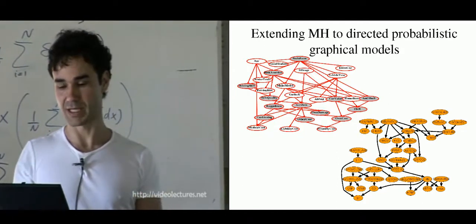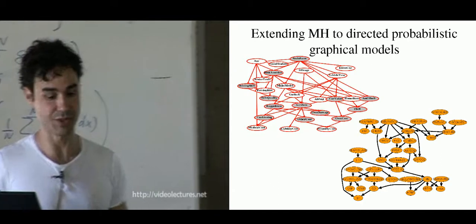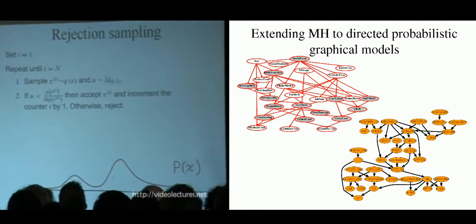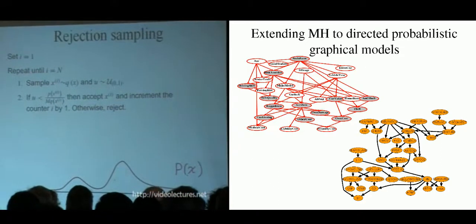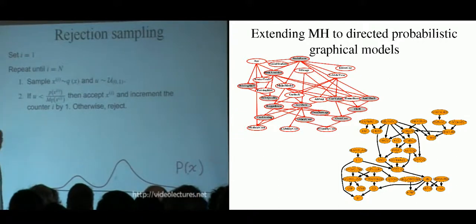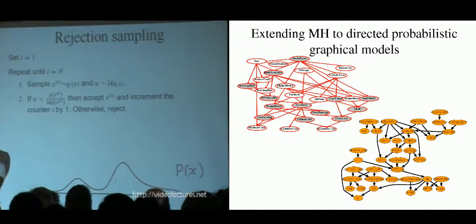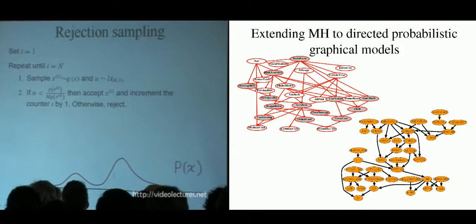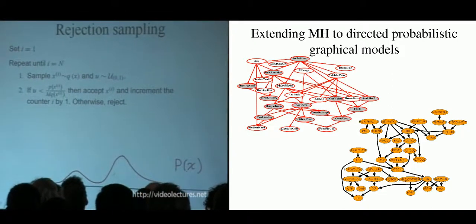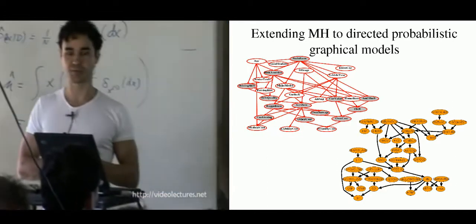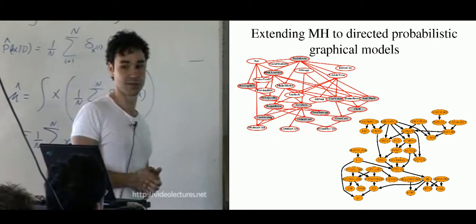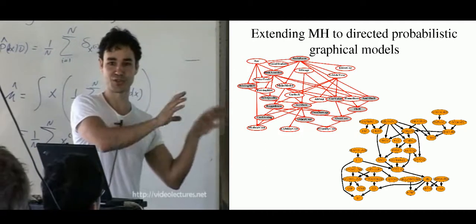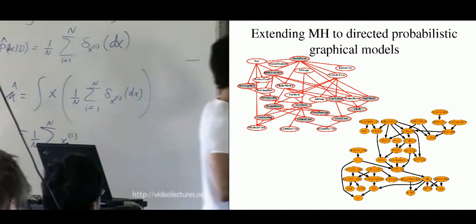Now let's look at the first basic technique for generating samples: rejection sampling. The algorithm is simple. We construct another distribution q(x) — think of it as a Gaussian, something we know how to sample from. Q(x) is a friendly distribution. I'm moving the problem to one of choosing a good q(x), but let's assume we have one.